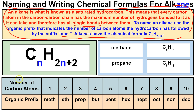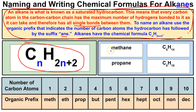When naming hydrocarbons, we have to memorize these organic prefixes. If the hydrocarbon has one carbon atom, the prefix is meth-; two is eth-; three is prop-; four is but-; five is pent-; six is hex-; seven is hept-; eight is oct-; nine is non-; and ten is dec-. These prefixes tell you how many carbon atoms that hydrocarbon has. For alkanes, the generic formula is CₙH₂ₙ₊₂, where n is the number of carbon atoms.